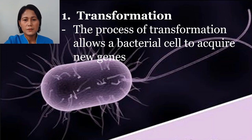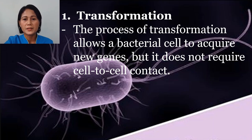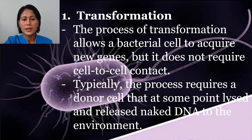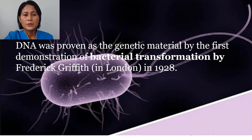The process of transformation allows a bacterial cell to acquire new genes, but it does not require cell-to-cell contact. Typically, the process requires a donor cell that at some point lysed and released naked DNA into the environment. The recipient cell is the one capable of taking up the DNA from the environment and incorporating it into its own genome, where the cell is described as being competent. DNA was proven as the genetic material by the first demonstration of bacterial transformation in the experiment conducted by Friedrich Griffith in London in 1928.